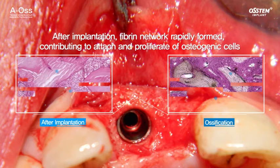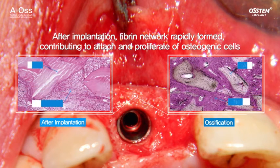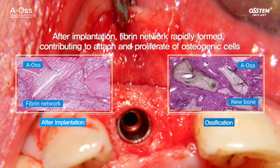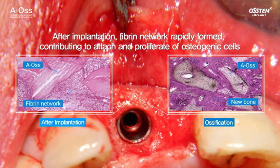Finally, Aeos, which has a pore structure similar to that of the human bone, has a structure that allows osteoblast cells to attach and proliferate, thereby forming excellent bone quality.